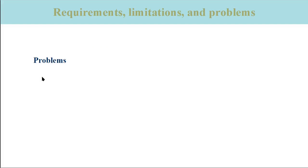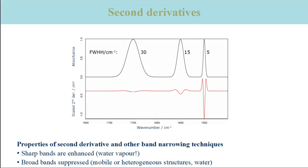Now I want to discuss a few problems associated with secondary structure analysis. We have already encountered that second derivatives are useful to identify component bands that are otherwise hard to detect in the amide-1 absorption spectrum. However, one has to be aware of a property illustrated in this slide. The black line shows a spectrum of three Gaussian lines with different widths, and the red line is the second derivative of that spectrum. While the maximum absorbance of the three Gaussian lines is the same, the amplitude of the second derivative increases significantly with decreasing bandwidths. Thus, the second derivative enhances sharp features in the spectrum and suppresses broad features.